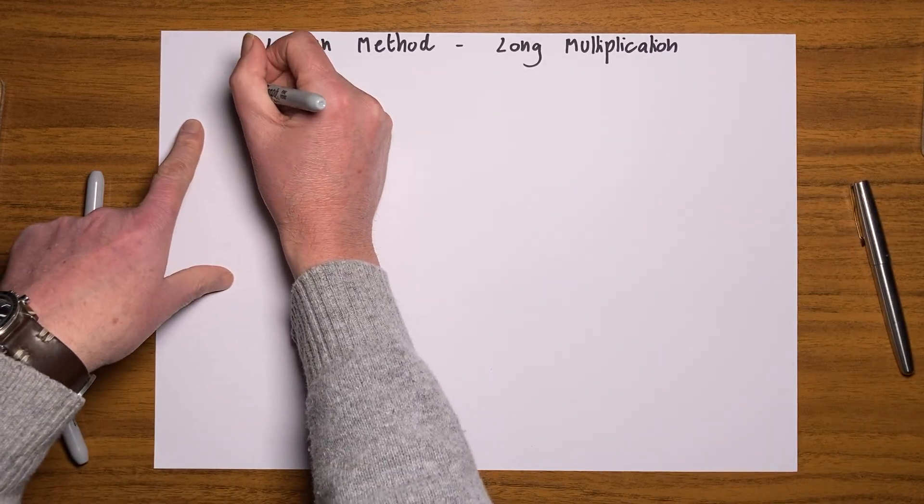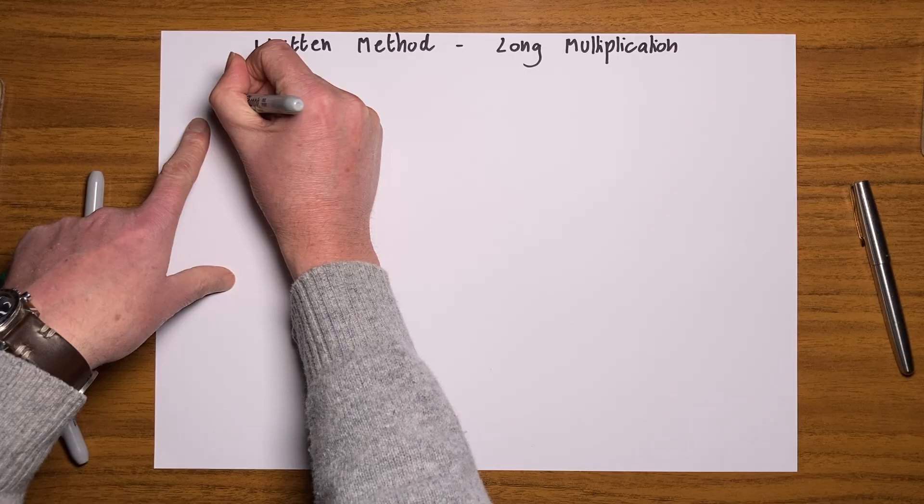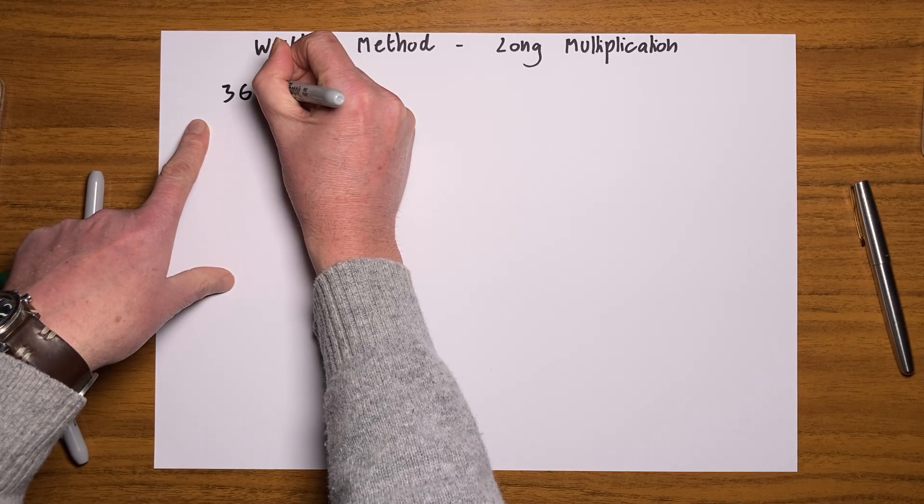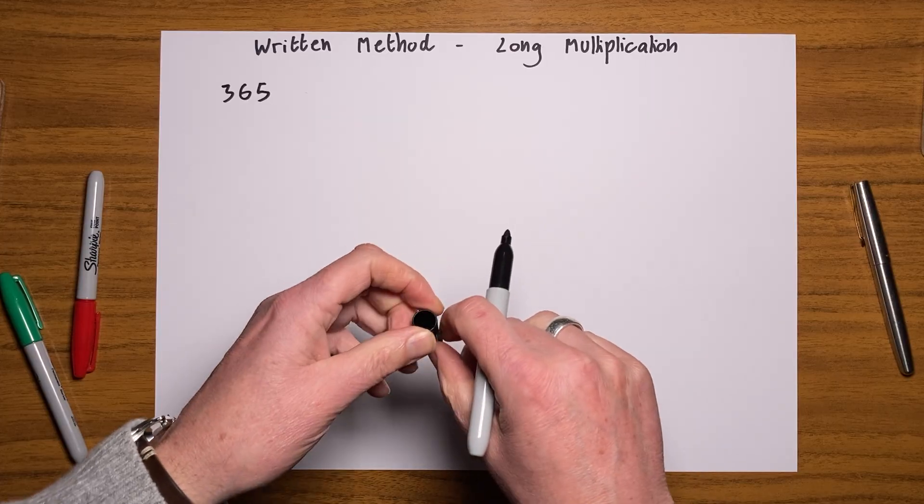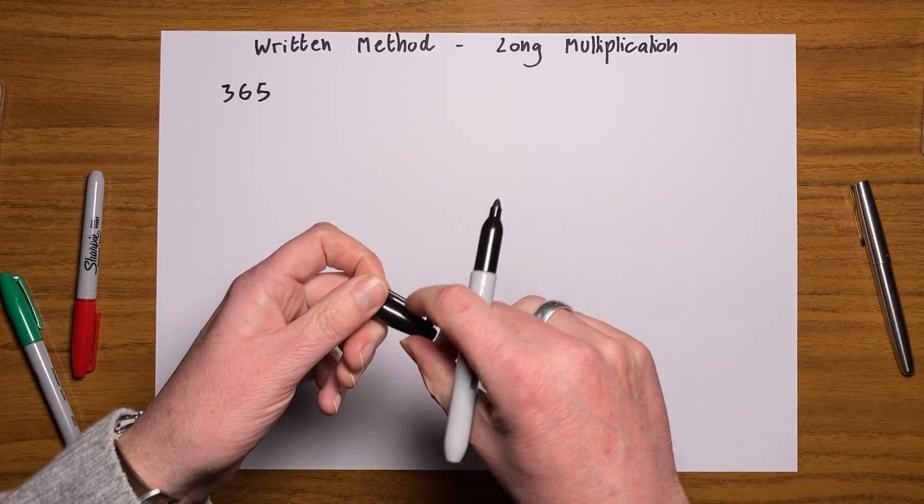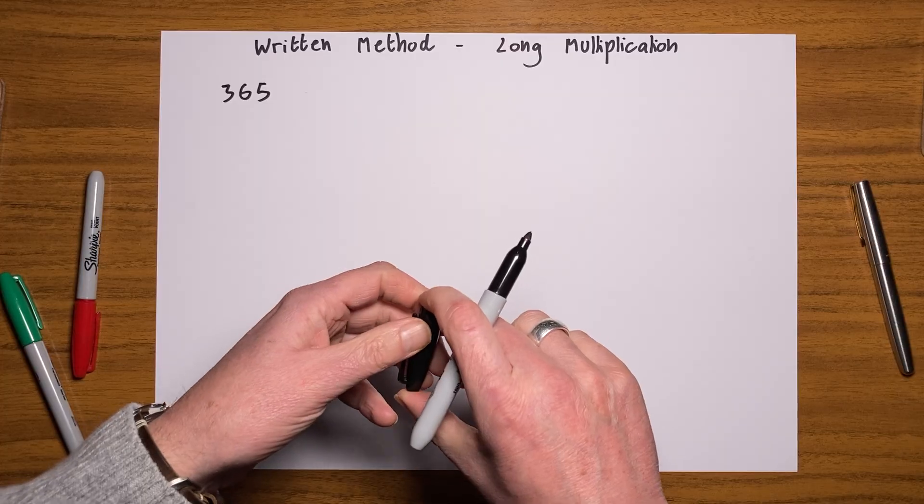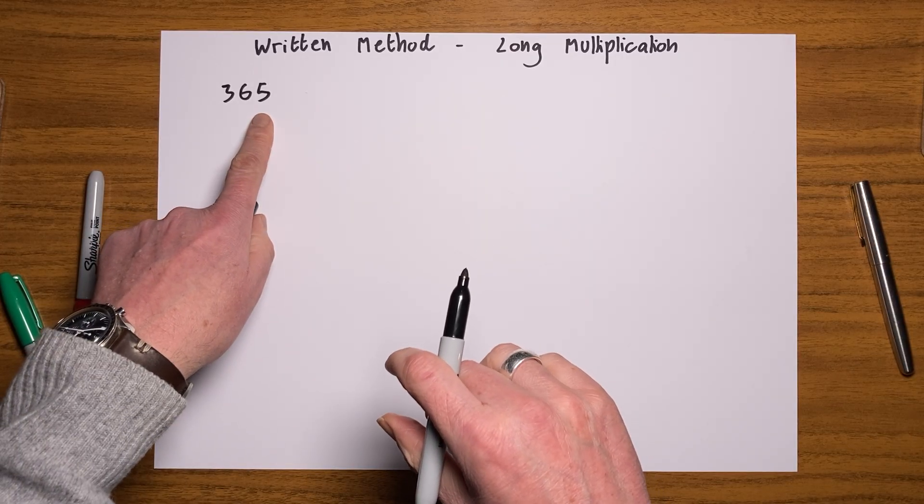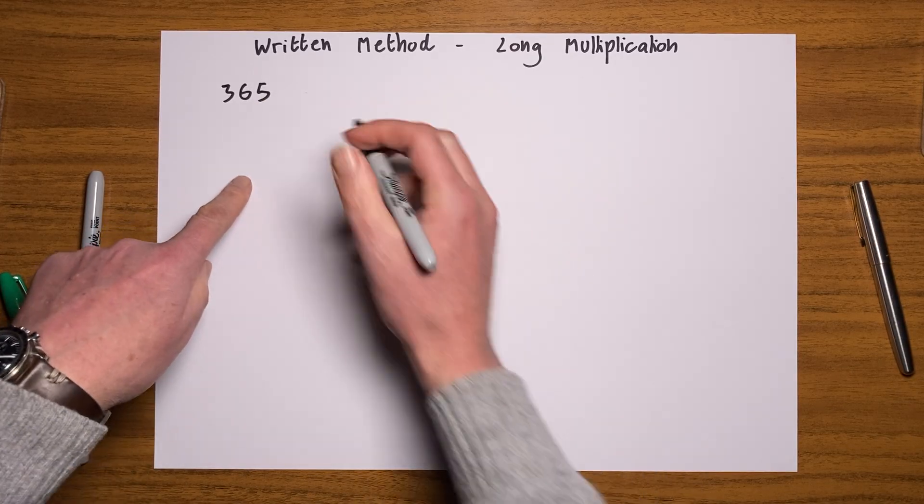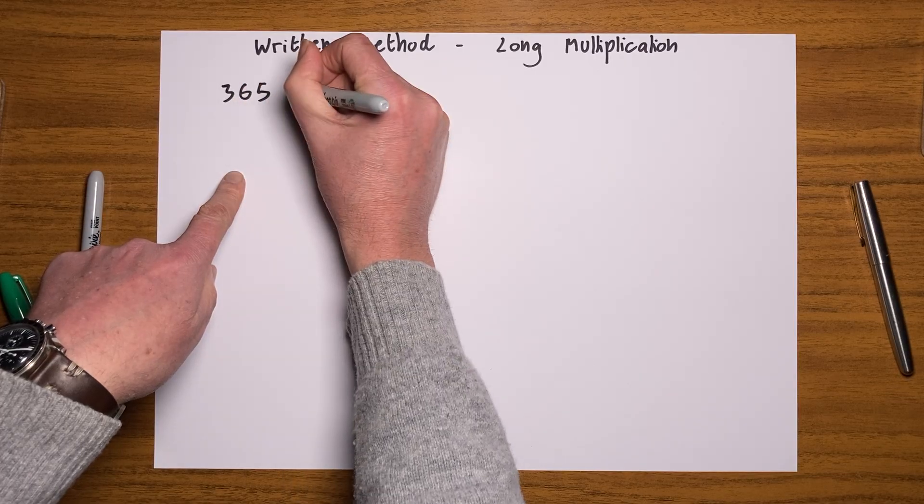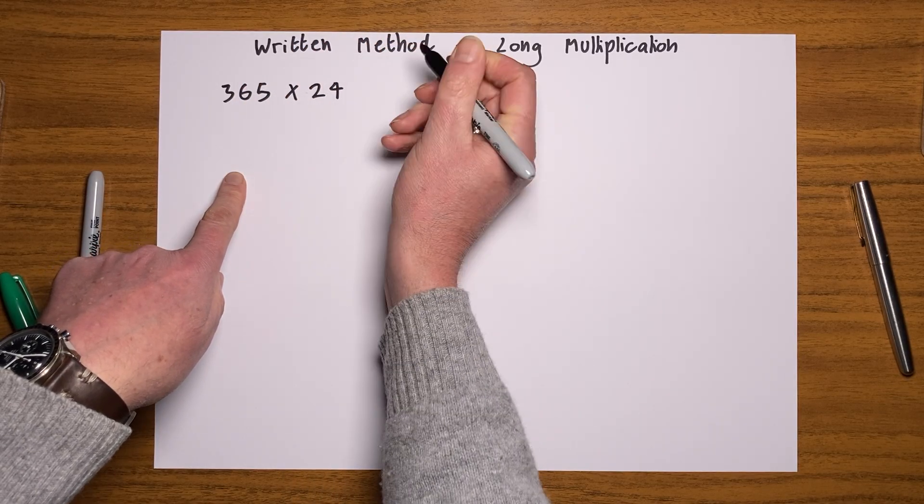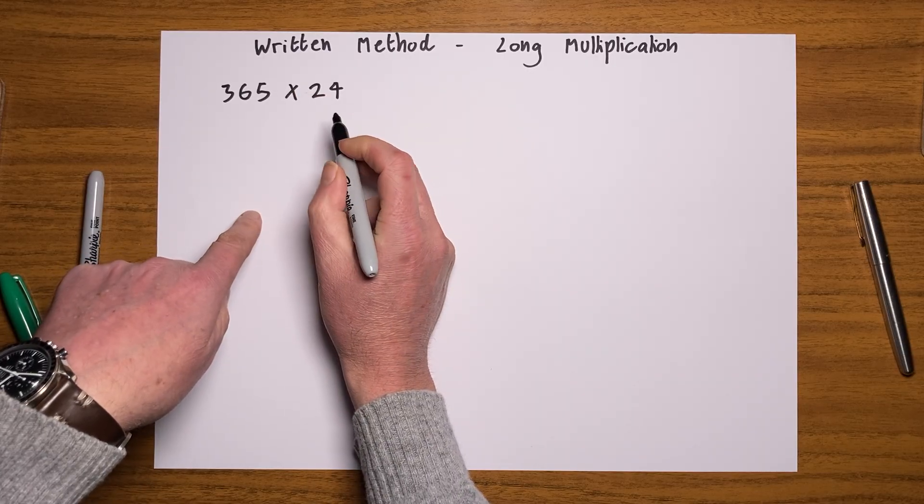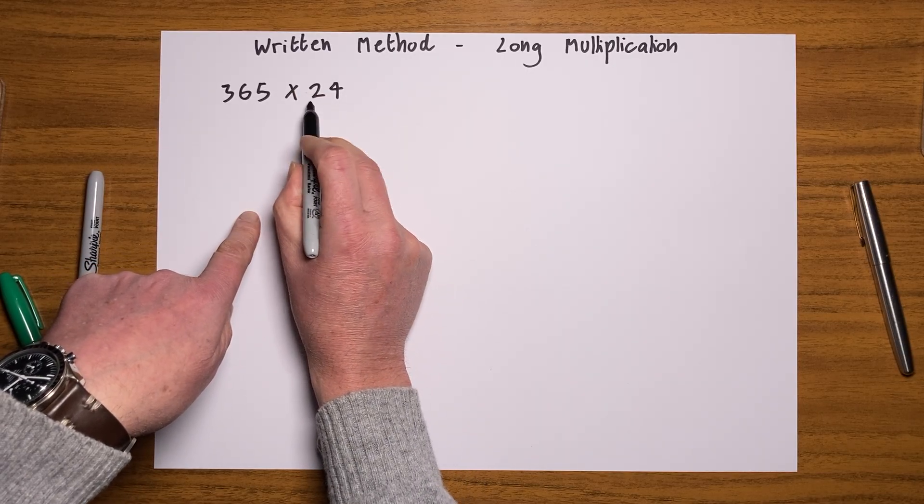So long multiplication works like this. I'm going to do something like 365, which would be useful if you thought to yourself, well, 365 days. Let's think to ourselves, I want to work out how many hours in a year. So there are 365 days in a year and there are 24 hours in a day, so I want to multiply those together.